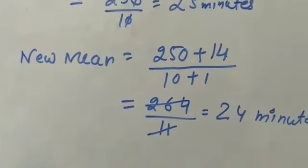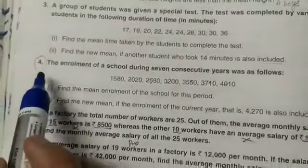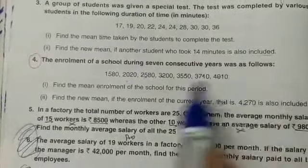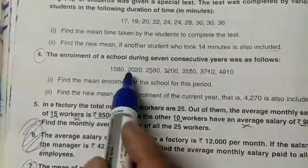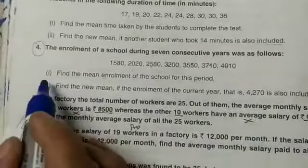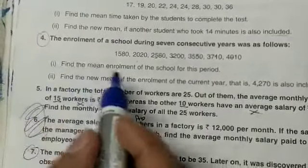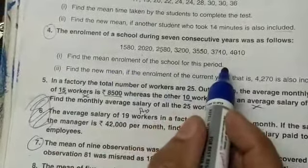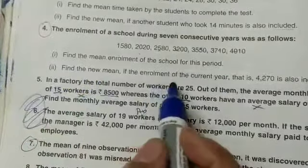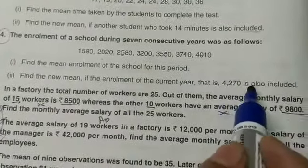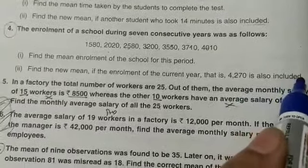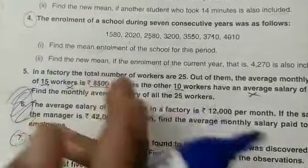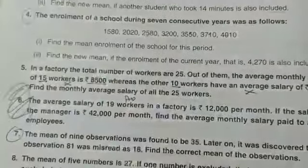Then we will start question number 4. The enrollment of a school during 7 consecutive years was as follows: 1580, 2020, 2580, 3200, 3550, 3710, 4010. Question: find the mean enrollment of the school for this period. Second, find the new mean if the enrollment of the current year, that is 4270, is also included. So this question is the same. You have to find the mean, similarly find the new mean. You can do it yourself.